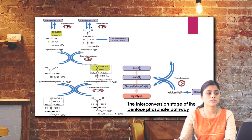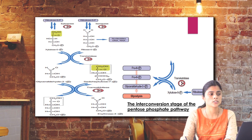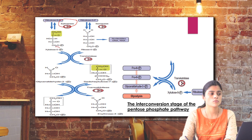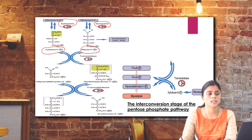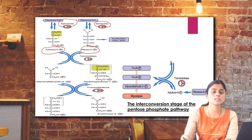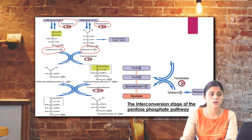Ribulose 5-phosphate undergoes an epimerization reaction catalyzed by epimerase, forming xylulose 5-phosphate — compounds differing at only one carbon are epimers. It can also undergo isomerization by isomerase to form ribose 5-phosphate, since isomers have the same molecular formula but different structural formulas. This ribose 5-phosphate is required for the synthesis of genetic material like DNA and RNA.